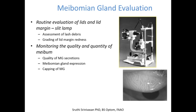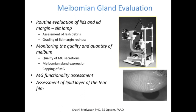Monitoring the quality and quantity of meibum is one of the very important aspects of meibomian gland evaluation. This can be done with a slit lamp by putting pressure on the lower and upper lid margins to see how the glands are secreting. The next steps involve staging secretions based on appearance, color, and consistency, assessing meibomian gland expressibility, and meibomian gland functionality assessment. Assessment of the lipid layer of the tear film can also be done using the new Keratograph 5M. Meibography is a very interesting feature in the new K5M.